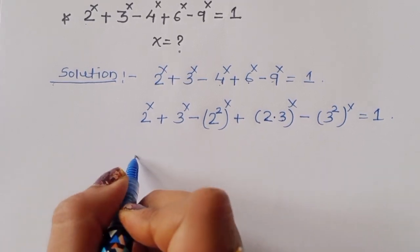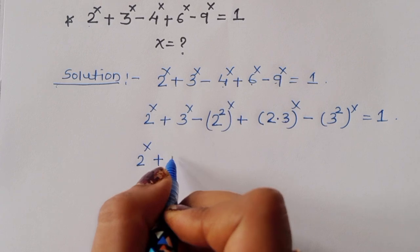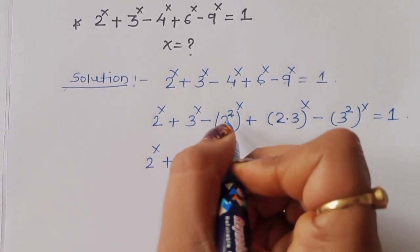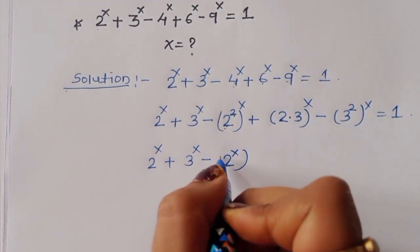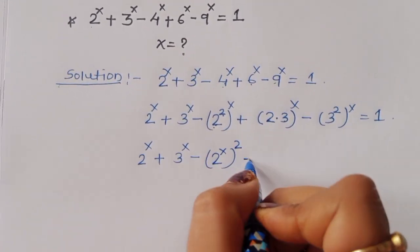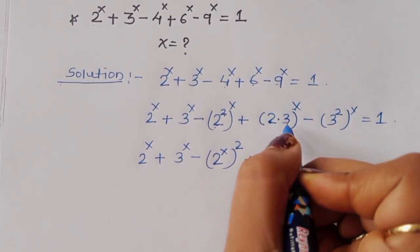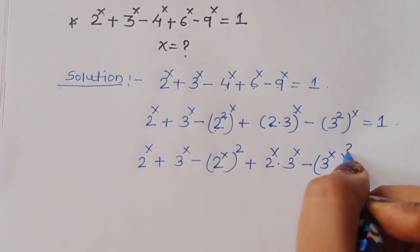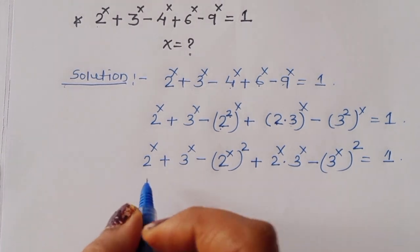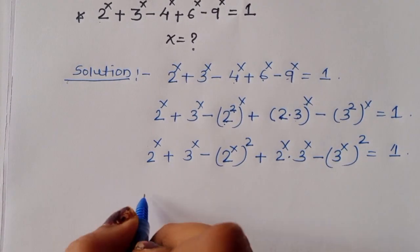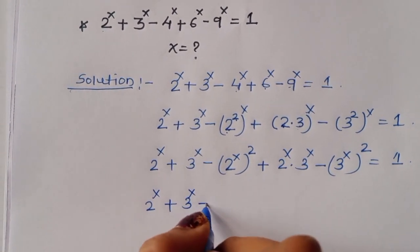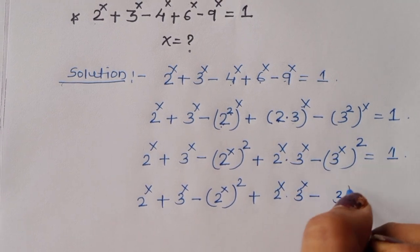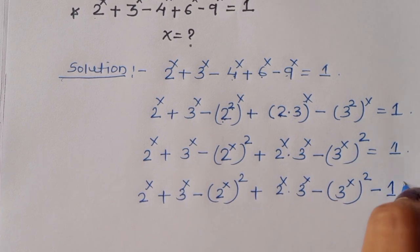Now: 2^x + 3^x - (2^x)² + 2^x · 3^x - (3^x)² = 1. Here we are taking x in power form, so we rewrite as: 2^x + 3^x - (2^x)² + 2^x · 3^x - (3^x)² - 1 = 0.